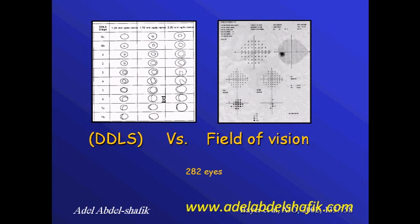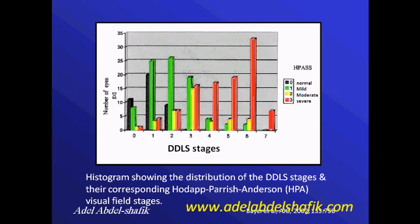The authors published a study to prove that their classification system is quite robust. They compared the disc classification with visual field results. In the study, severe glaucoma by visual field is shown in red, moderate glaucoma in yellow, and minimal visual field changes in green. As you can see, in cases with severe disc changes according to the disc classification, the visual field changes tend to fall on the more severe side as well.